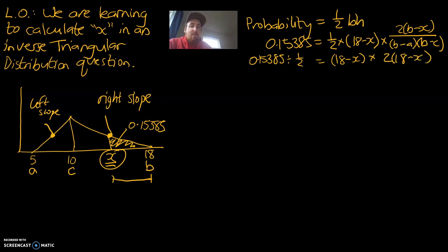So, b was from our graph or our chart. b minus a is 18 minus 5. And b minus c is 18 minus 10. We're going to keep simplifying this. So, that number divided by one-half comes to 0.3077.